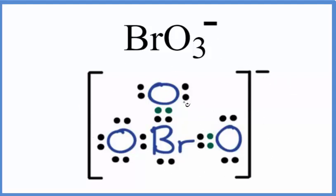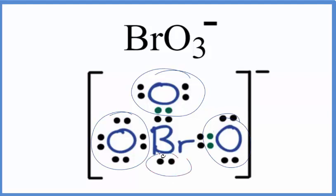And what we're going to do is count how many things are attached to this central bromine atom here. So we have this oxygen here, here, here, and then we have a lone pair. So we have a total of four things attached to the bromate ion, and one of them is a lone pair. So let's take a look at this table here.